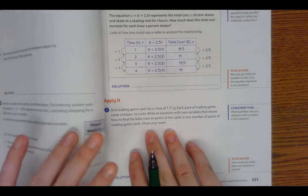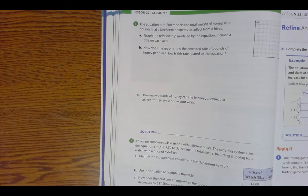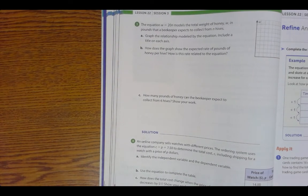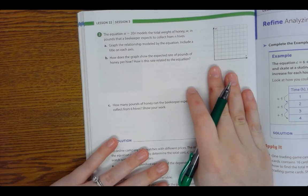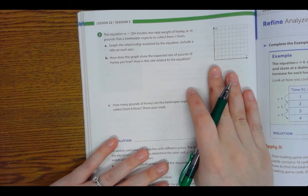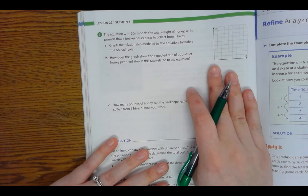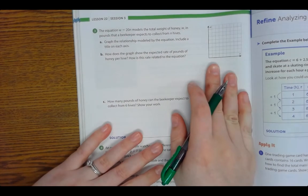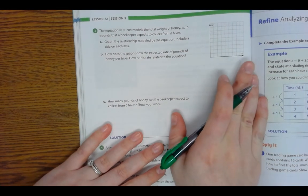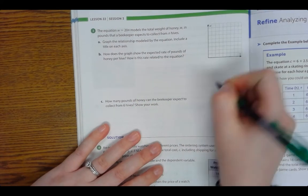Go to page 520 on the back. Go ahead and try this problem on your own and then come back and we'll try it together. All right. The equation W equals 20N models the total weight of honey W in pounds that the beekeeper expects to collect from N amount of hives. Graph the relationship modeled by the equation. Include a title on each axis. So we're going to use N, number of hives.